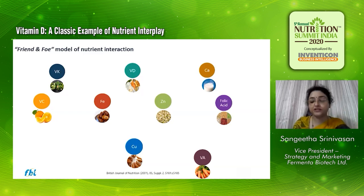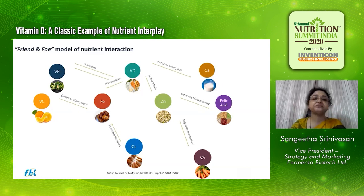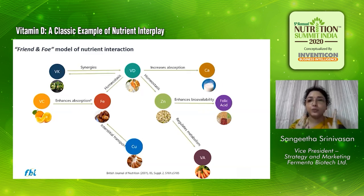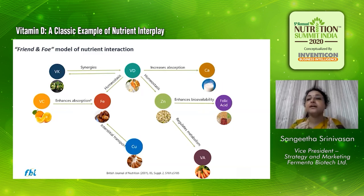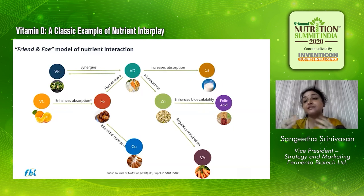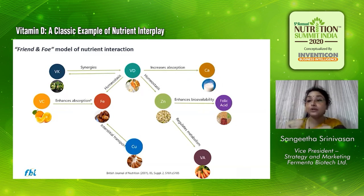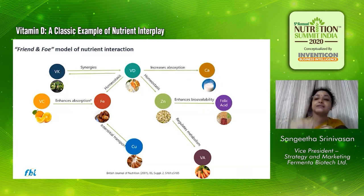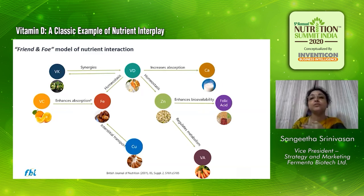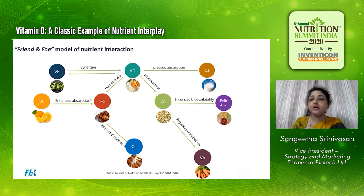Let's first look at the positive or the friend aspect. Vitamin C: we all know that vitamin C, when given in combination with iron, enhances the absorption of iron. There are studies which show that it enhances absorption close to 70%. Same is the case with copper — copper enhances absorption of iron. Zinc enhances the bioavailability of folic acid and also regulates the metabolism of vitamin A.